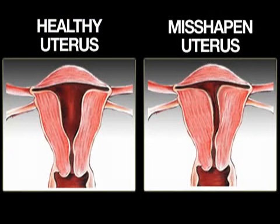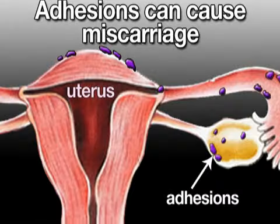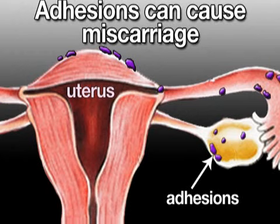Sometimes, a mother may have internal difficulties of her own that can lead to an interrupted pregnancy. One example is the misshapen uterus, in which a woman's uterus is not large enough to accommodate the needs of a growing baby. Some women experience miscarriages or even infertility due to non-cancerous tumors in the uterine cavity, which are called submucous fibroids. Others have adhesions or scar tissue inside the womb, which can restrict the implantation of the fetus and stunt its growth, leading to a miscarriage.